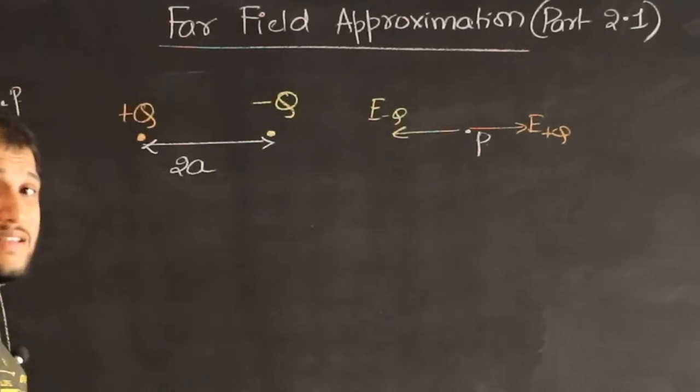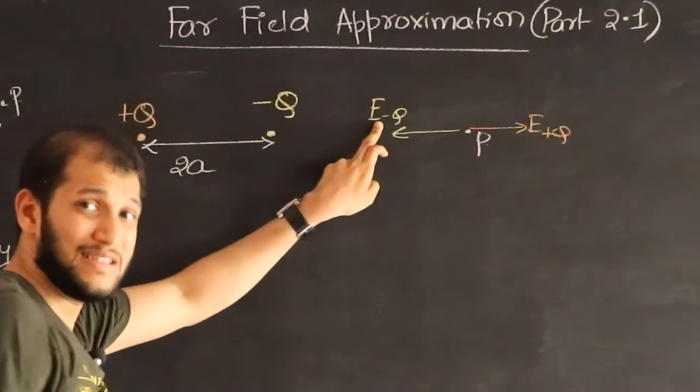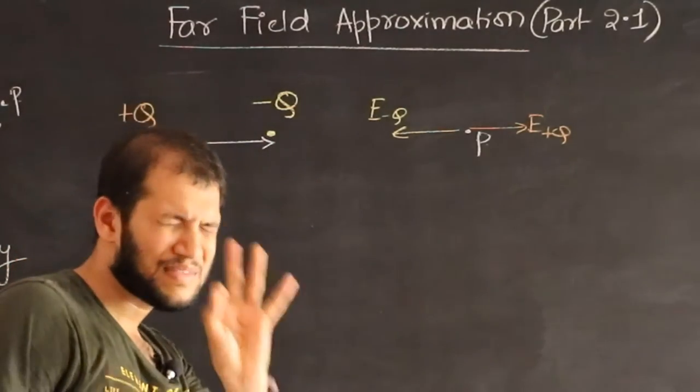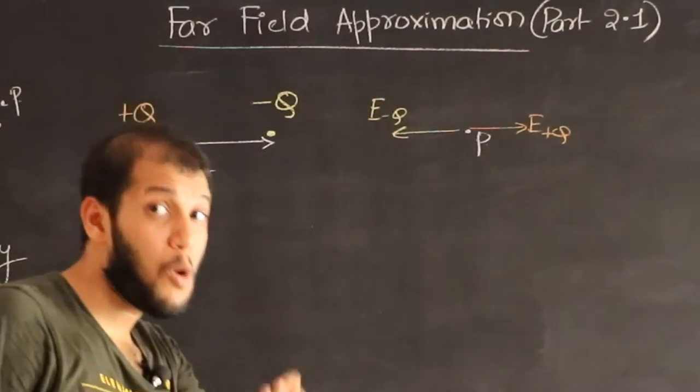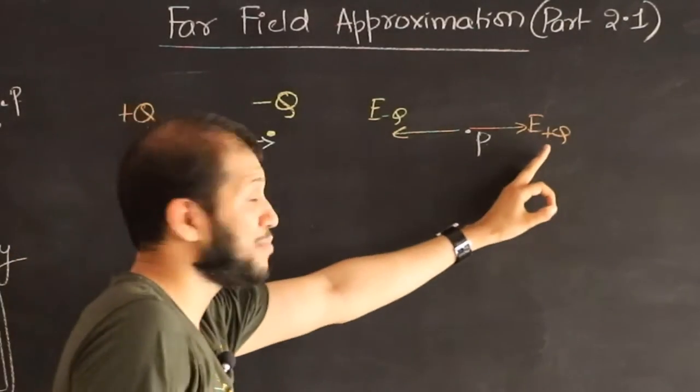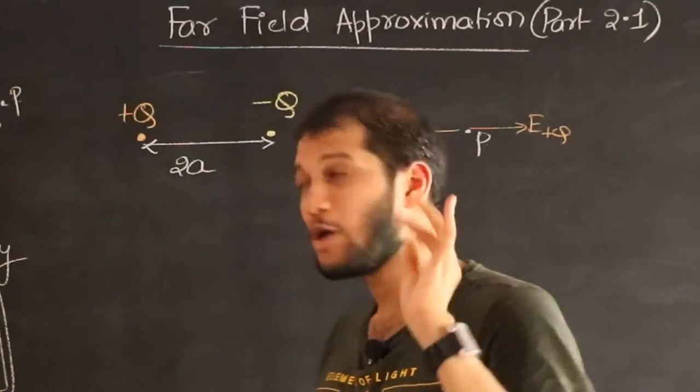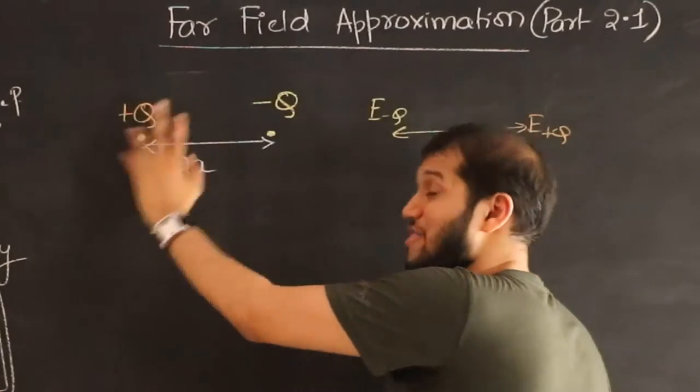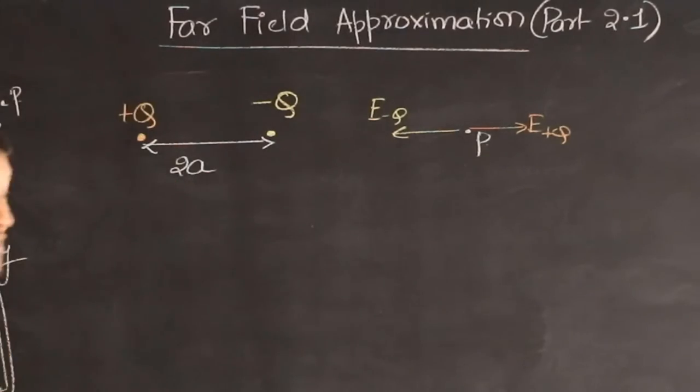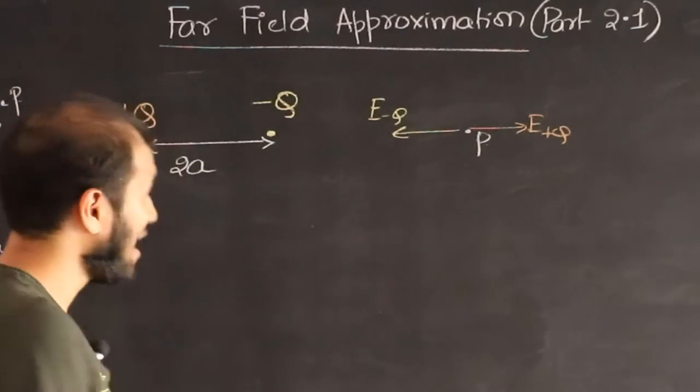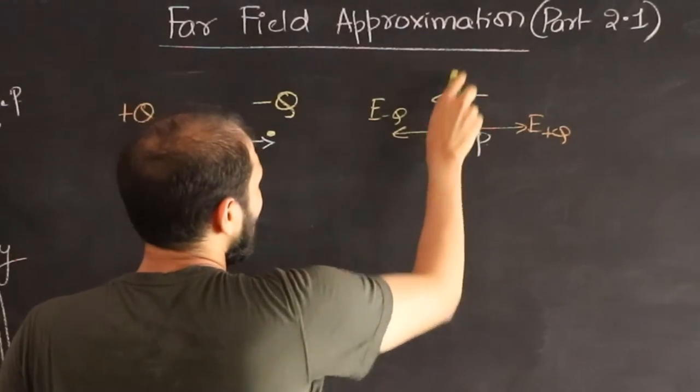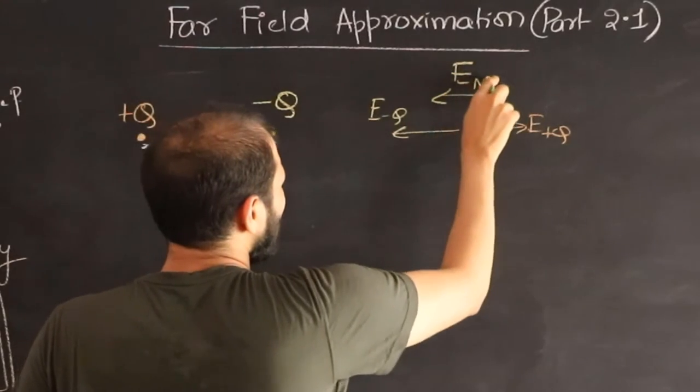And what you can notice now is that the electric field of minus Q is a little bit more than the electric field of plus Q, because that point P is a little bit closer to minus Q than plus Q. And thus the electric field over here is now in this direction. This now is the net field.